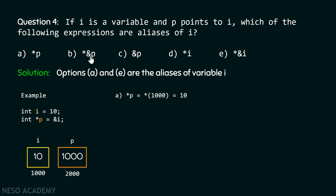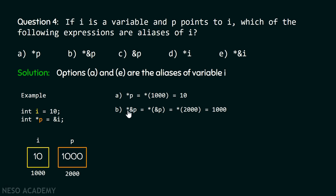For option (b), `*&p`: `&p` gives us the address of p, which is 2000. Then `*(2000)` gives us the content at location 2000, which is 1000. So `*&p` equals 1000, which is not equal to i. Therefore, option b is not correct.